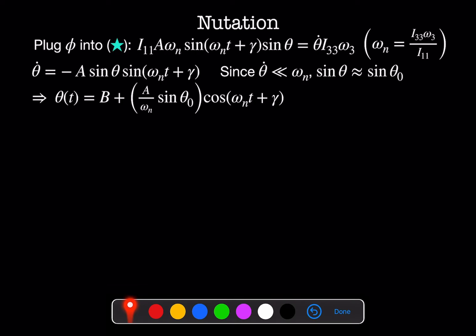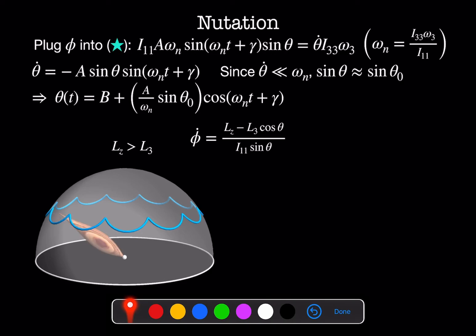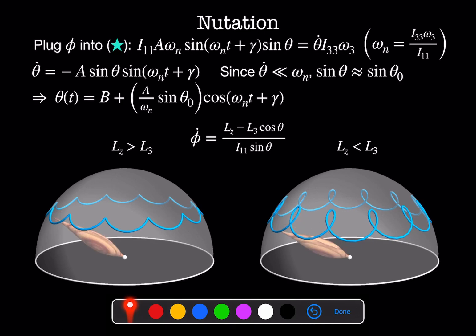Now that we have equations for theta, phi, and psi in terms of the physical parameters, what do these solutions look like? Returning to our equation for phi dot: when Lz is greater than L3, phi dot is always positive, so theta always precesses with a single sign — phi moves steadily in one direction and theta oscillates up and down between two values, theta1 and theta2. If on the other hand Lz is less than L3, then phi dot changes sign, meaning phi moves both backwards and forwards while theta oscillates. Today we've discussed the physics and math behind the rotating heavy top.